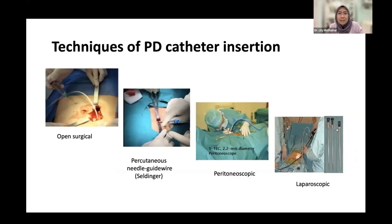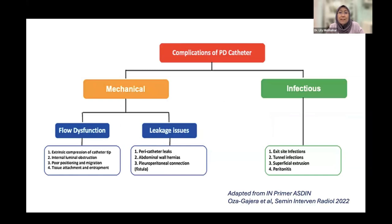Techniques for PD catheter insertion include open surgery, percutaneous Seldinger or guide-wire method, peritoneoscopic method, or laparoscopic. In Malaysia, more than 80% of PD catheters are inserted by the nephrologist, either by peritoneoscopic or Seldinger method. However, certain cases — especially complicated ones anticipating hernia repair or patients with very pendulous abdomen — are referred to the surgeon for a more challenging PD catheter insertion.